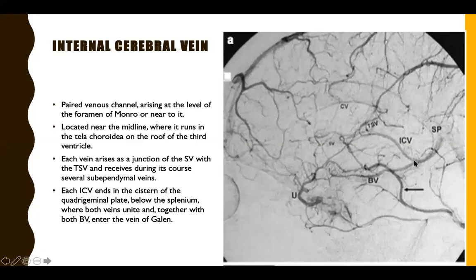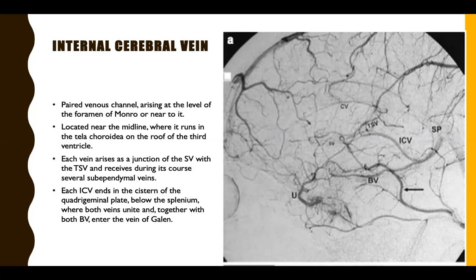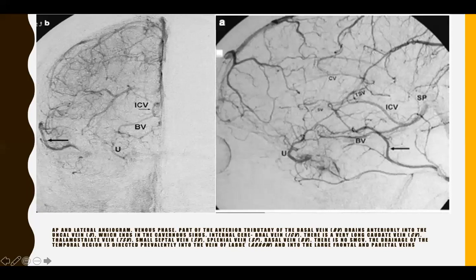The internal cerebral veins are a paired venous structure on the medial surface, formed by the thalamostriate vein and septal vein near the foramen of Monro. They run in the tela choroidea, or roof of the third ventricle, near the midline. Multiple sub-ependymal veins drain directly into them. The internal cerebral veins end in the quadrigeminal cistern, running below the splenium, where they join the basal vein of Rosenthal to give rise to the vein of Galen.